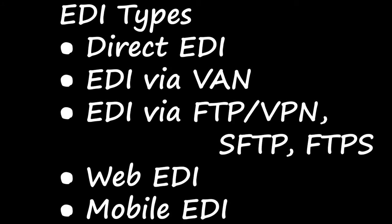The types of EDI were constructed based on how the EDI communication connections and conversations are organized. The types are based on the medium used for transmitting EDI documents: Direct EDI, EDI via VAN, EDI via FTP or VPN, SFTP, FTPS, Web EDI, and Mobile EDI.